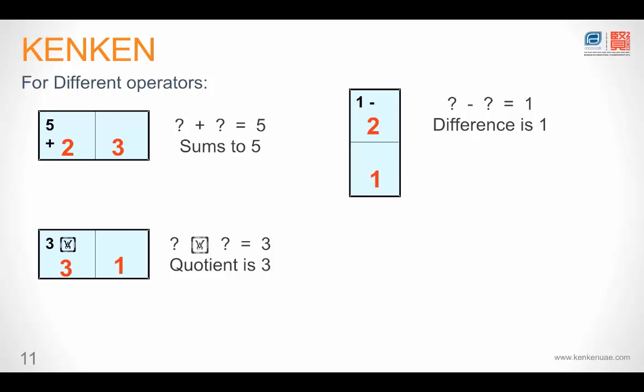This is an interesting one. This cage has three boxes, so we would need three numbers. It says nine times. So we would need to multiply three numbers to get nine. Hence three, one and three. Three times one is three. Again three times three is nine.